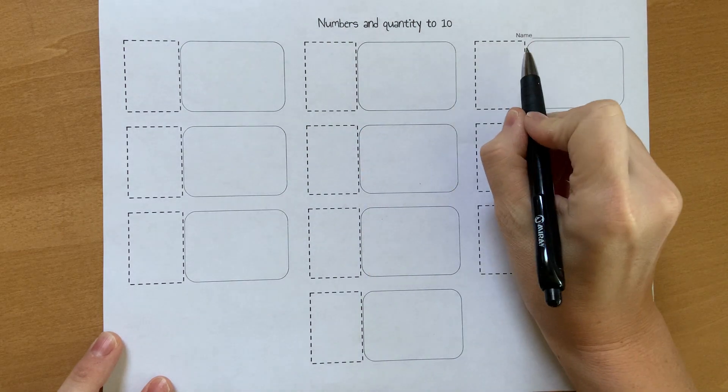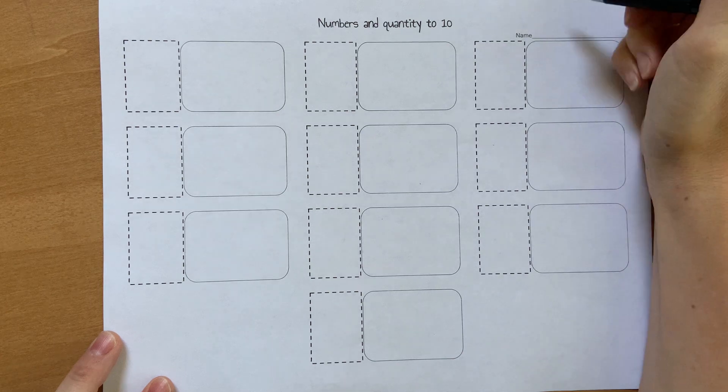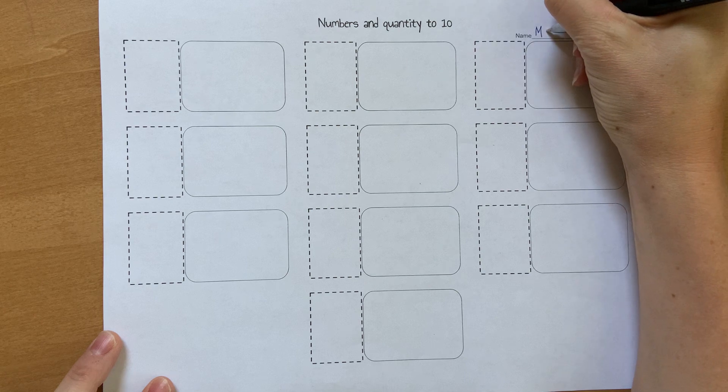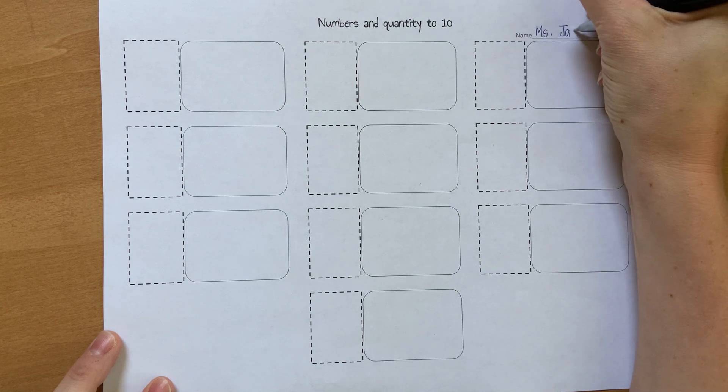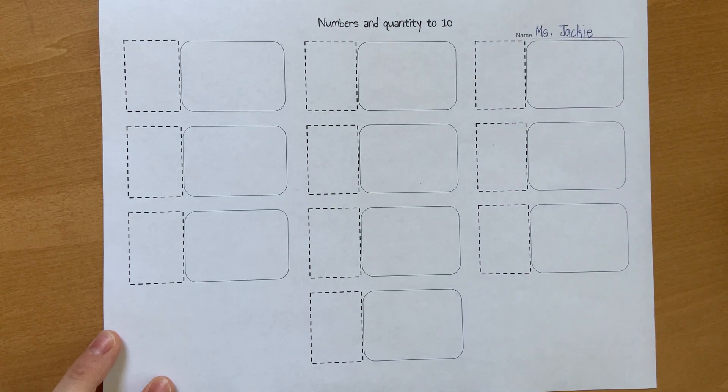So we're going to start up at the top here where it says name and you're going to write your name. I'll write my name which is Miss Jackie. I wrote my name. If you still need another minute, you keep writing and you write your name.